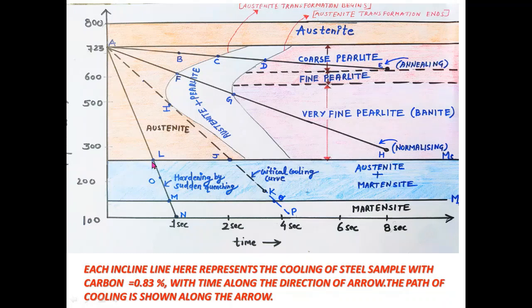When you project these points onto the x-axis, that is the time axis, you will find the various times corresponding to these points, and these times will be the incubation period for each of the cooling paths taken. At points C, F, and I, the phase is austenite and it is just going to convert into pearlite when we cross these points while going through paths AE, AH, AP, and AN.